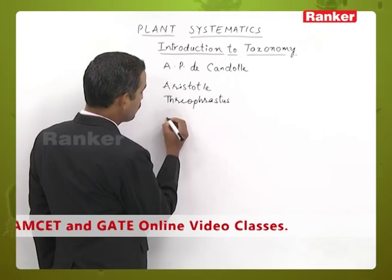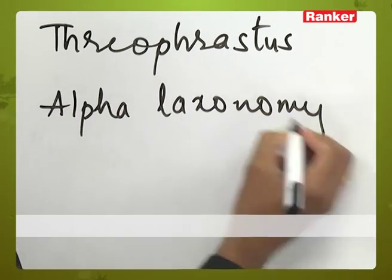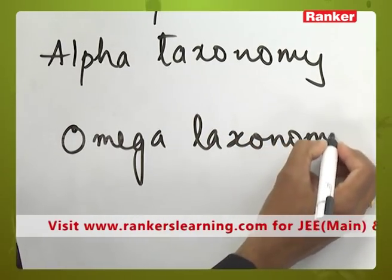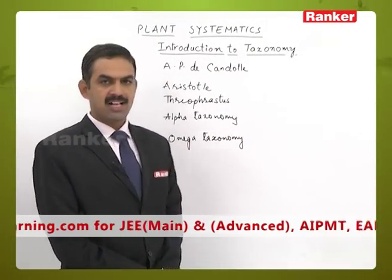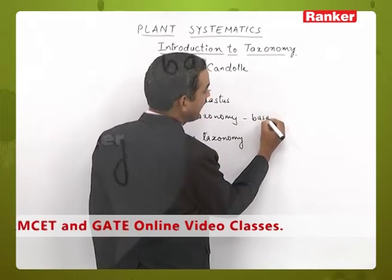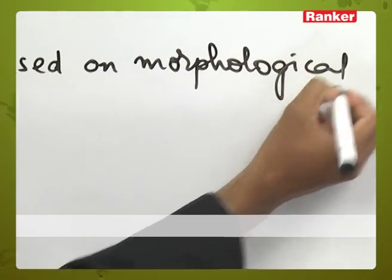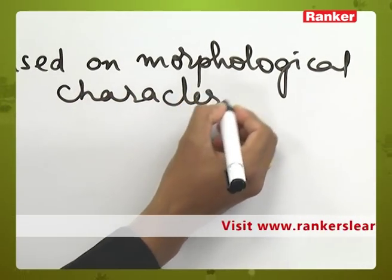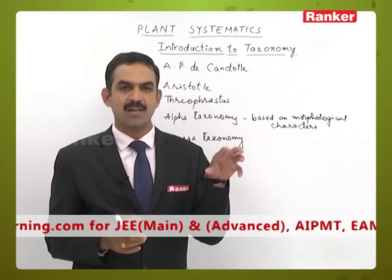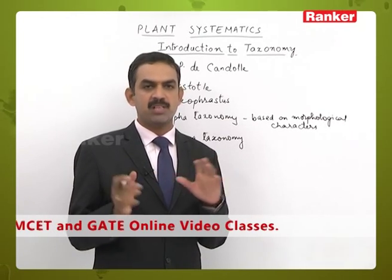Broadly, there are two categories: one is alpha taxonomy and omega taxonomy. Alpha taxonomy means the classification of plants based on morphological characters. The criteria taken for classification is morphological characters. Plants showing similarity in morphological characters are kept under one family or group, and those differing in their morphological characters are kept in different groups.